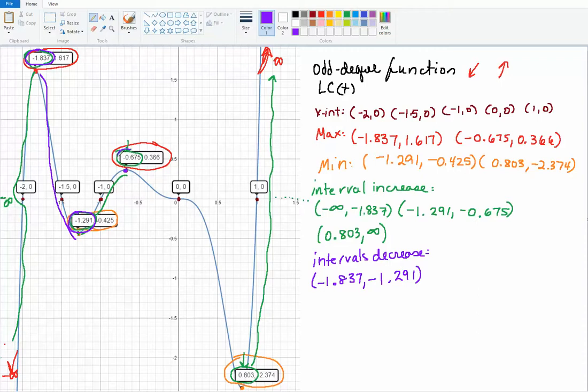And then from this x value right here, function is going down, down, down, up until here. So from negative 0.675 to 0.803, the function is decreasing.